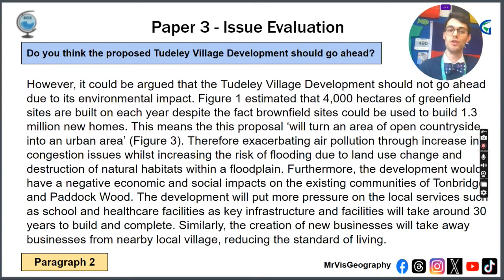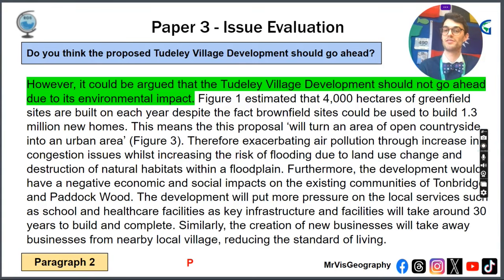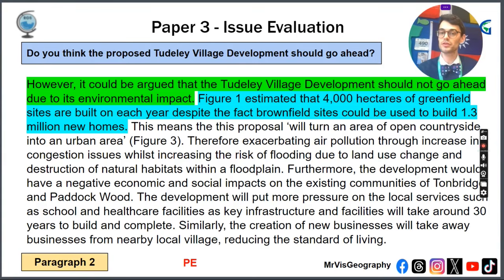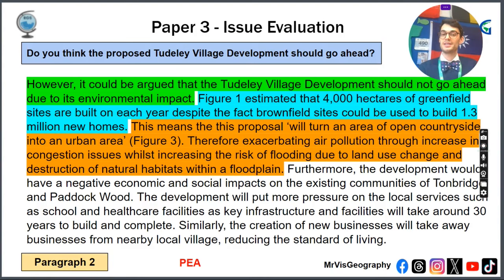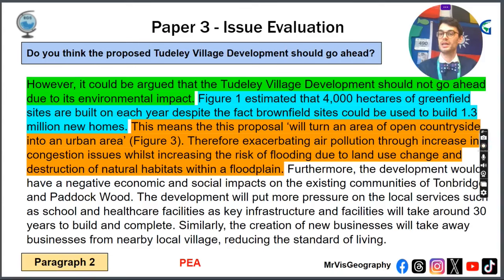That's paragraph 1 on yes. In paragraph 2 on no, you'd say: 'However, it could be argued that this plan shouldn't go ahead due to its environmental impact.' The evidence could be that 4,000 hectares of greenfield sites are built on each year, despite the fact that brownfield sites could be used to build 1.3 million new homes — that's a quote from figure 3. This means an area of open countryside will end up looking like an urban area, exacerbating air pollution, congestion, increasing the risk of flooding because they'd be building near the floodplain, and making the ground impermeable due to surfaces like tarmac and concrete.